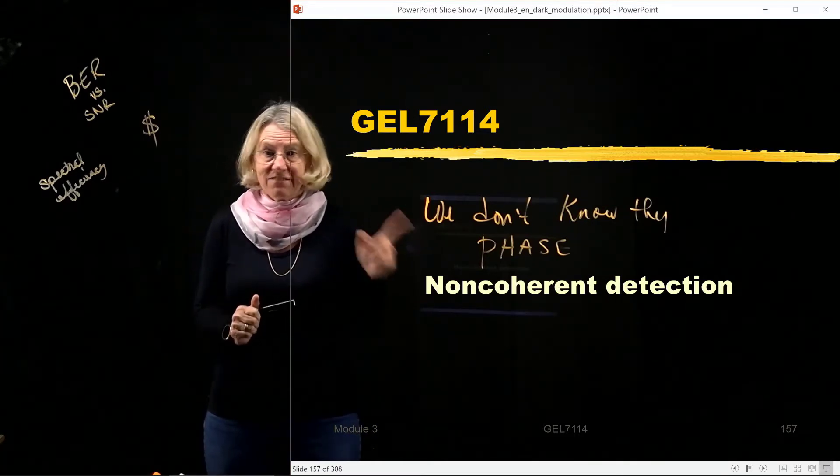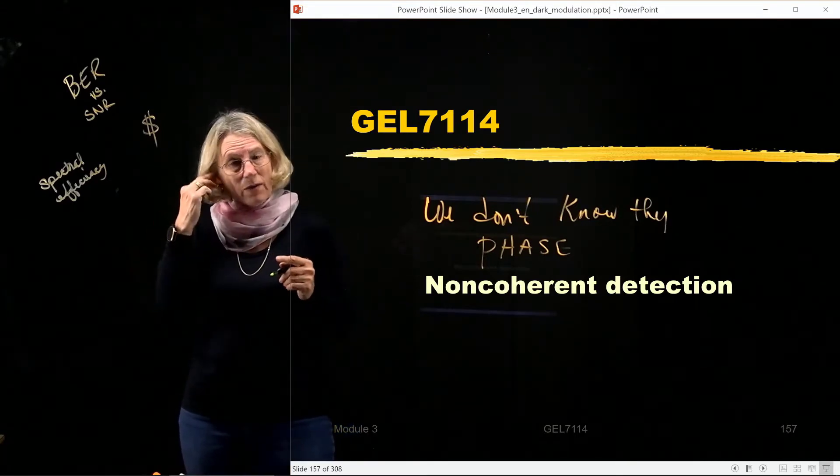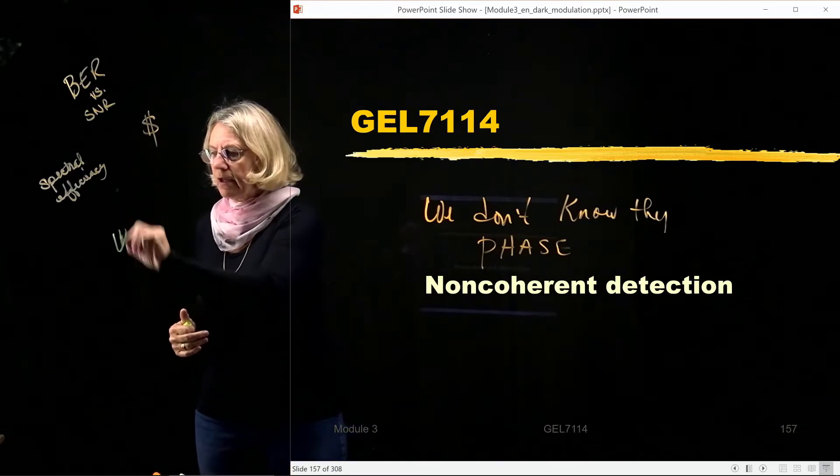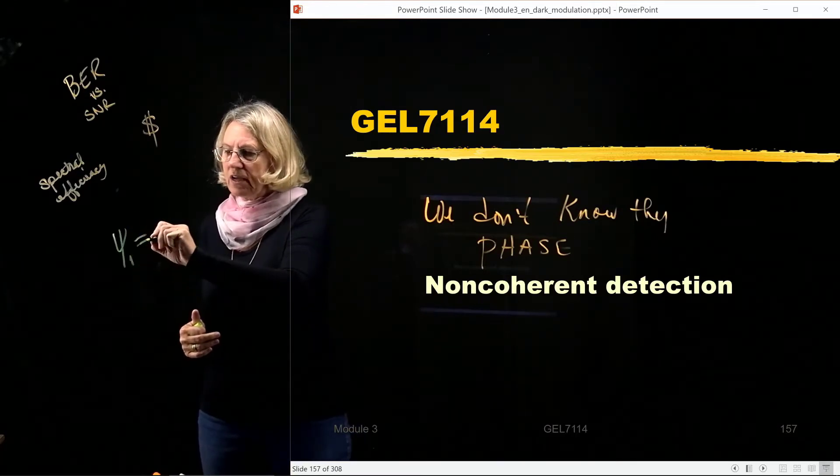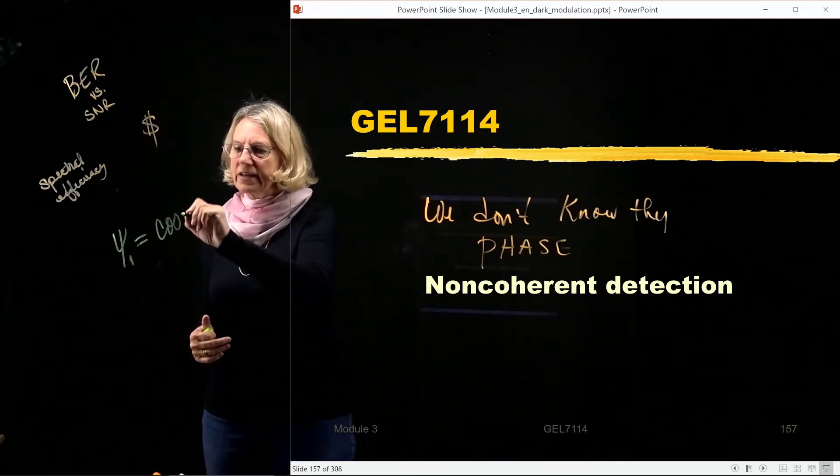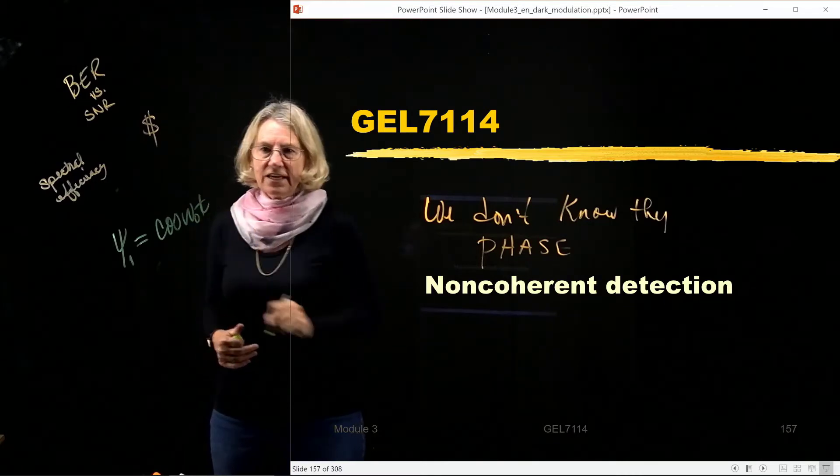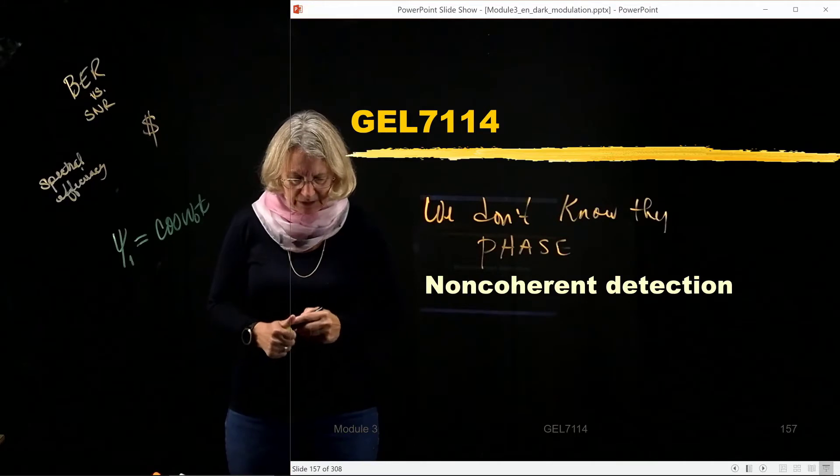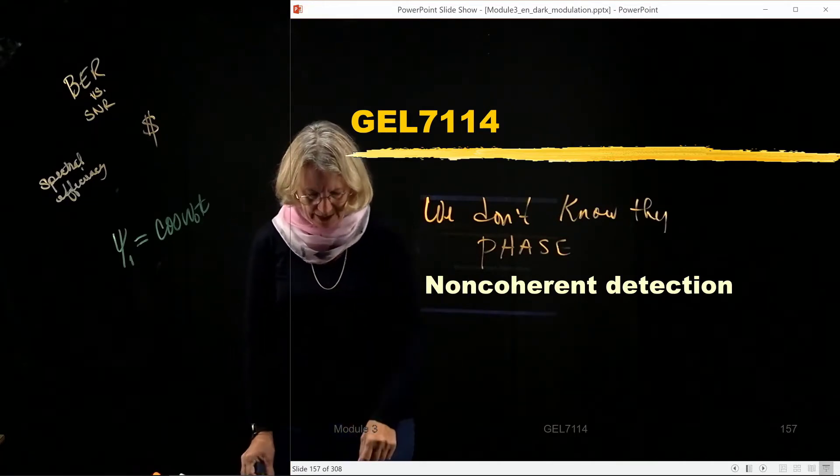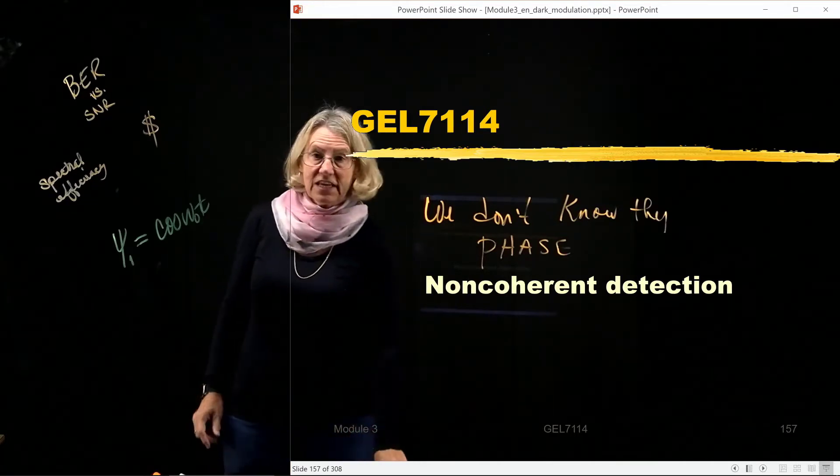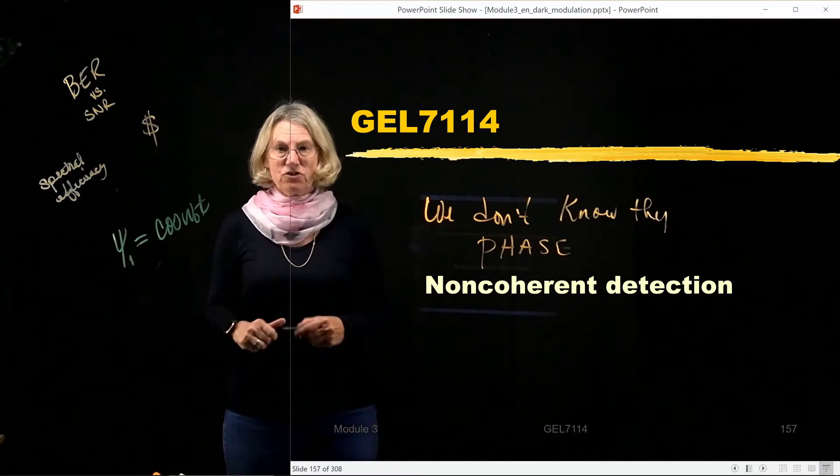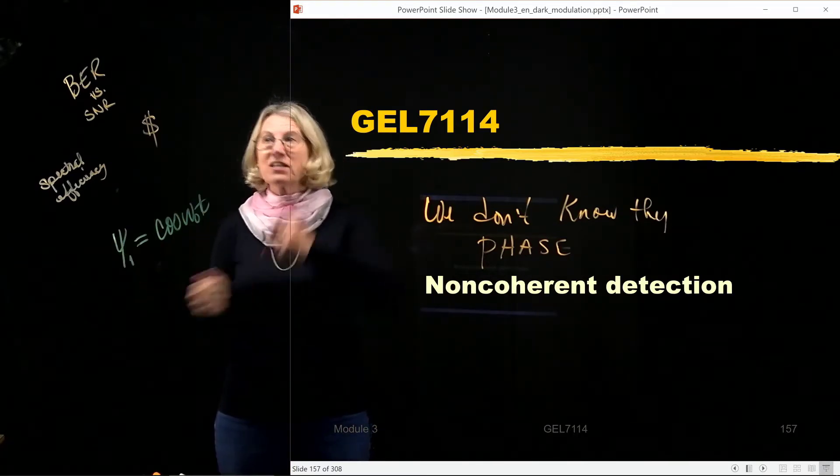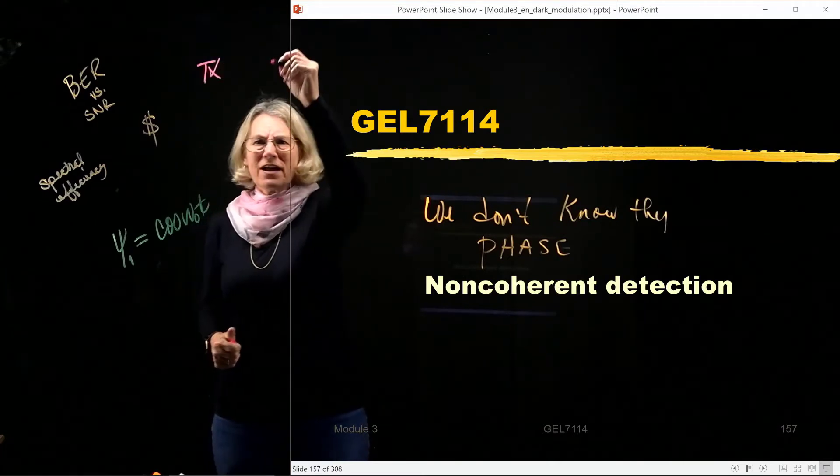Remember, in our coherent receivers, we have these basis vectors, the basis vectors which are somehow this cosine ω₀t and sine ω₀t. If it's FSK, there'll be a couple of different frequencies. And when I'm talking about these basis vectors, somehow I'm assuming that there's this perfect coordination between the transmitter and the receiver.